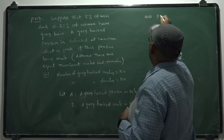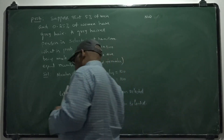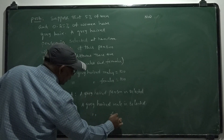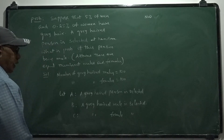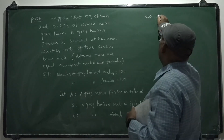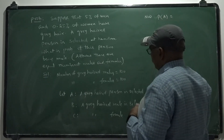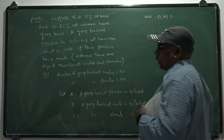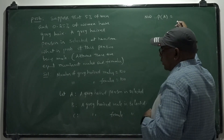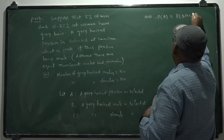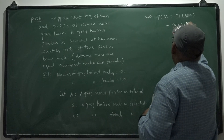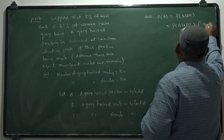And suppose C stands for the event that a gray-haired female is selected. Now P(A), the probability that a gray-haired person is selected, means the happening of either B or C. So probability of B union C equals probability of B plus probability of C, since B intersection C is empty.